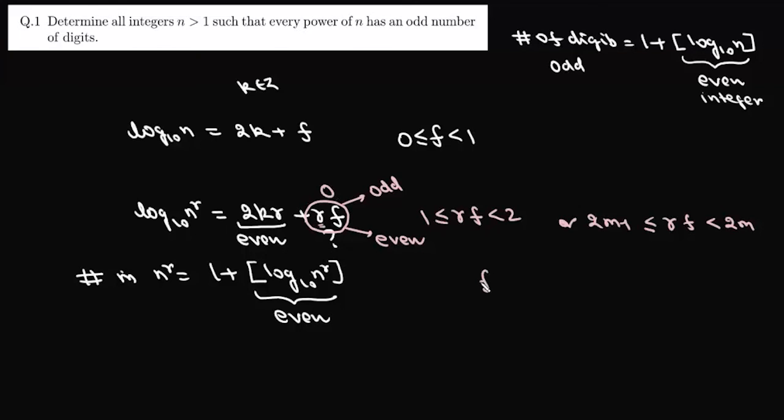So that means it is possible if and only if f is 0. So from here we have derived the condition that the rth power of n will have an odd number of digits if and only if its fractional part is 0. When f is 0, we can simply write log n base 10 as 2k, or n is simply 10 to the power 2k. So a number whose every power has an odd number of digits is of the form 10^2k, and that is the answer to this question.